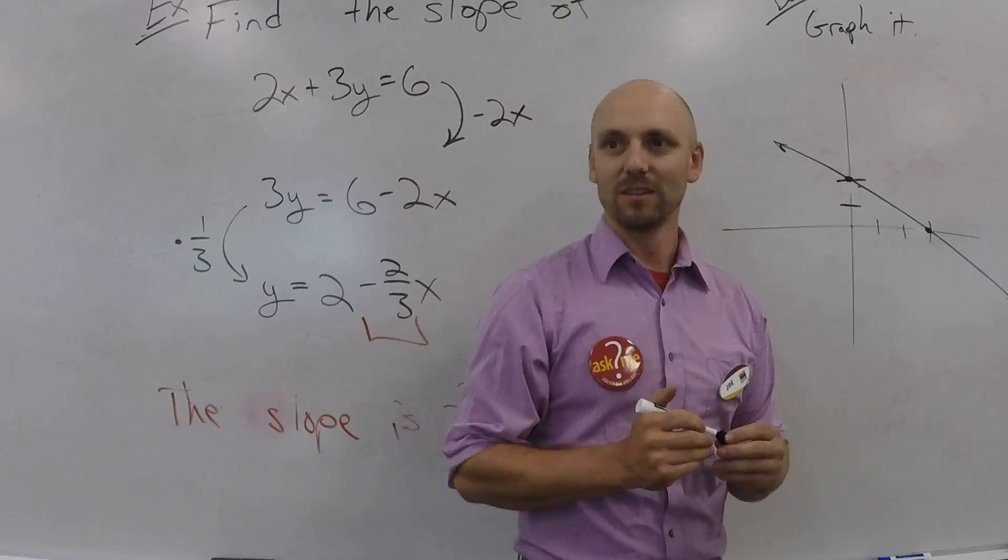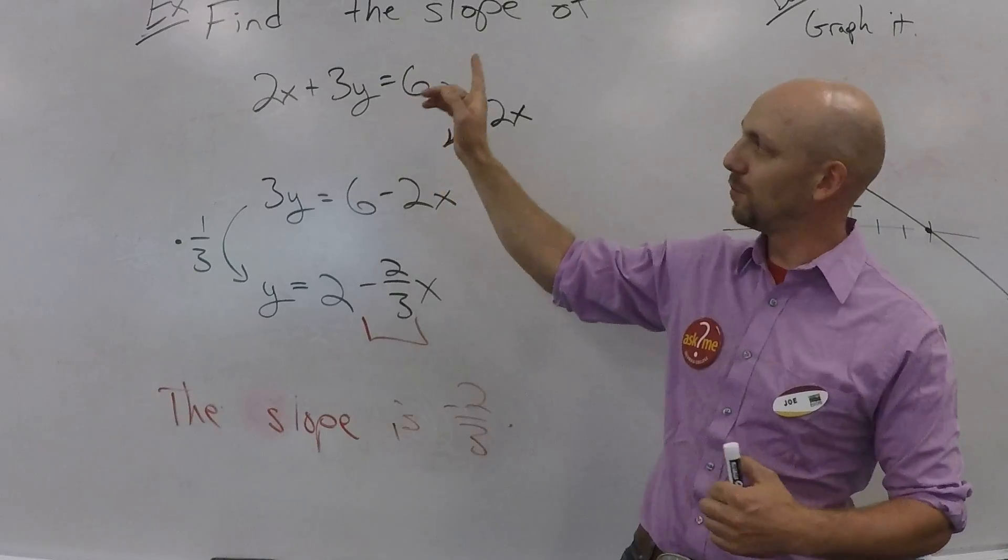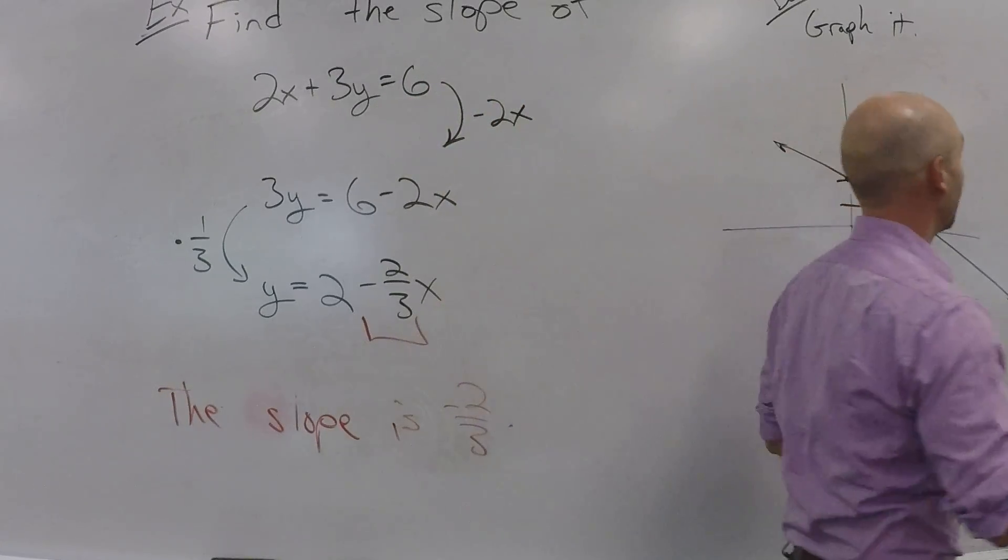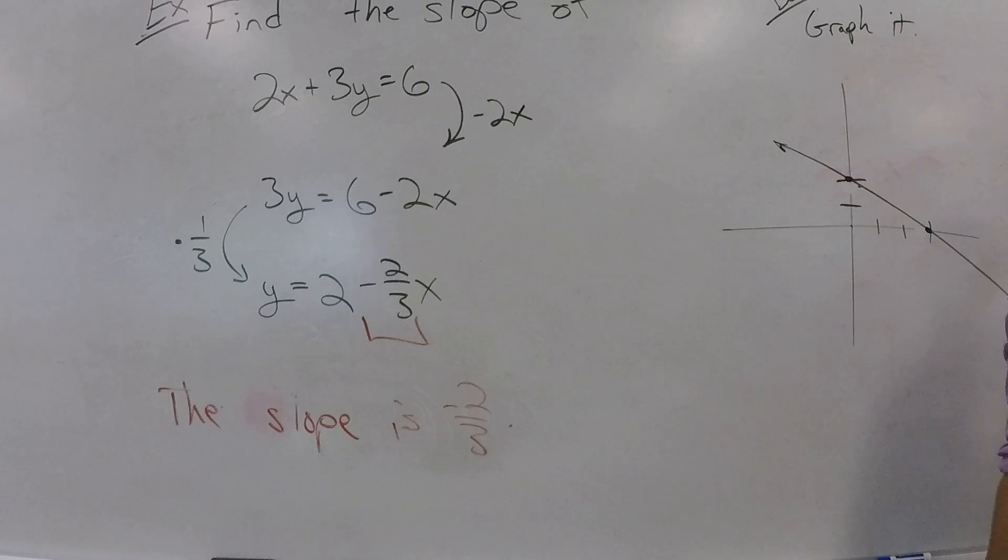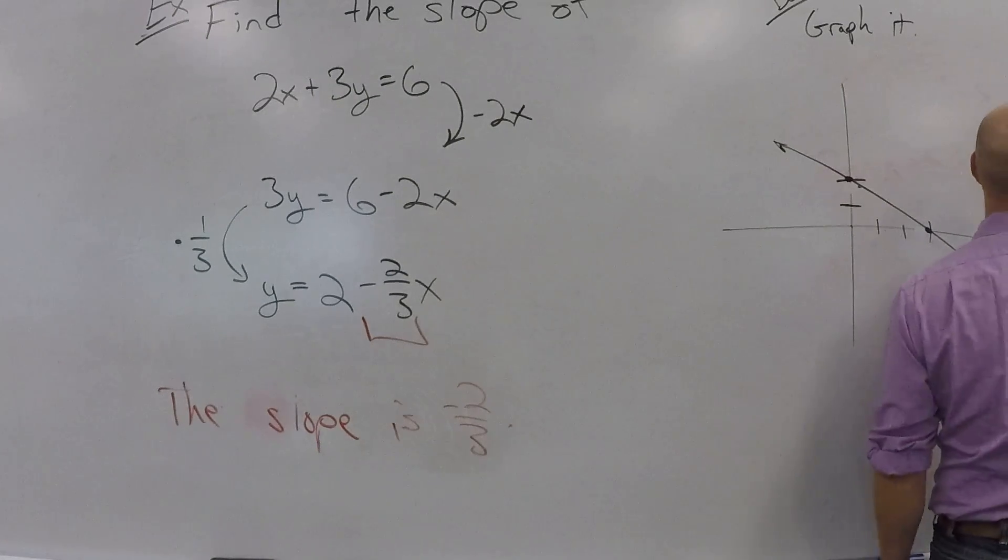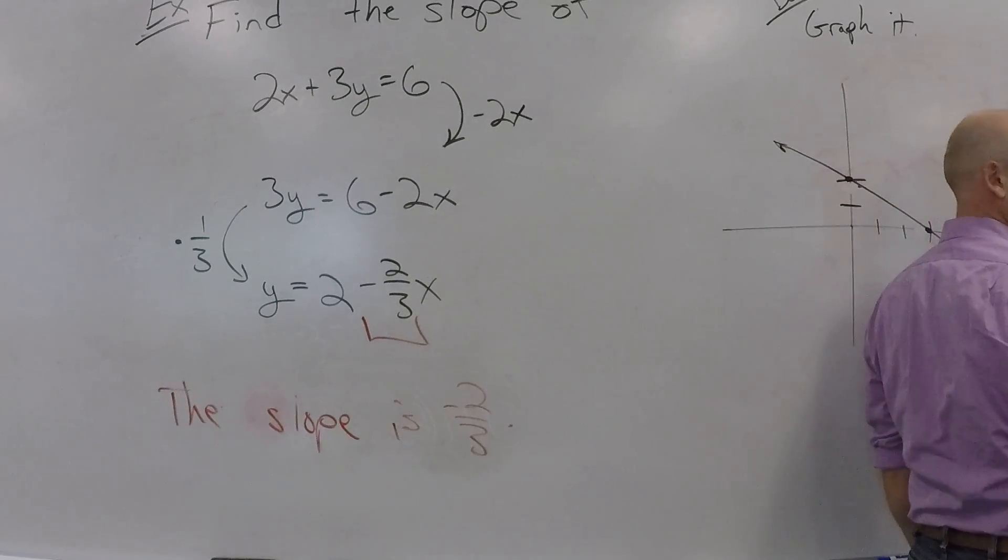There's another cool trick. So, graphing lines in standard form can be pretty chill. If you start with your, so I got my 2X plus 3Y equals 6, right? So, if I think to myself, X is 0, right? If X is 0, then 3Y is 6. So, Y is 2.